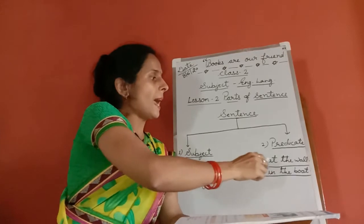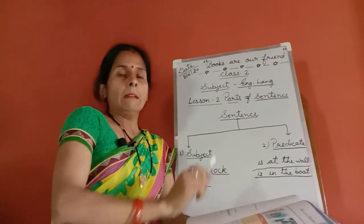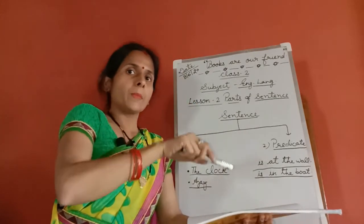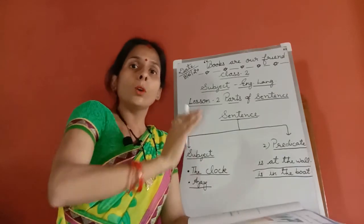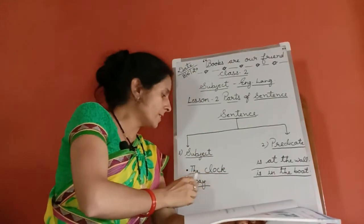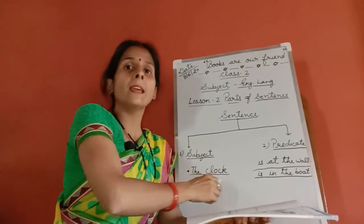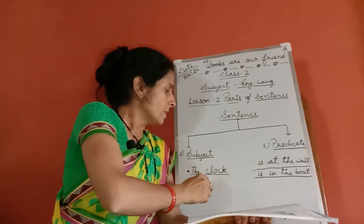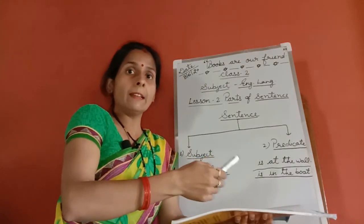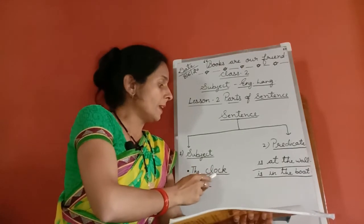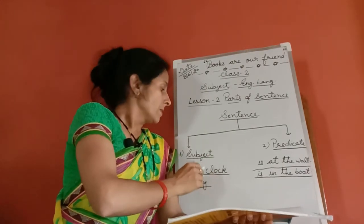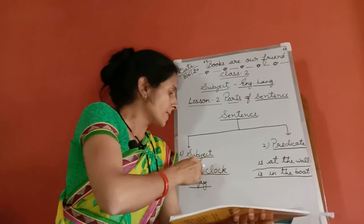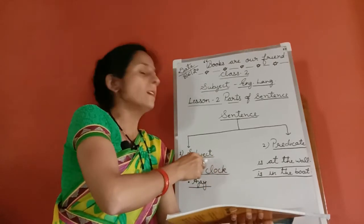The clock is on the wall. We ask the question: which thing is on the wall? The answer is the clock. So 'the clock' is the subject. The remaining words — 'is on the wall' — form the predicate.